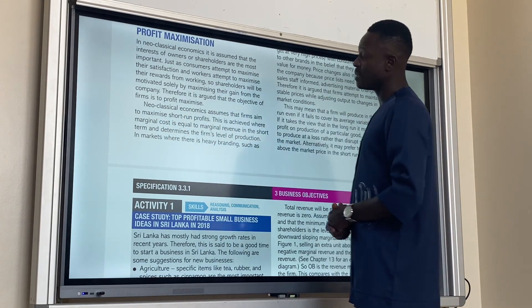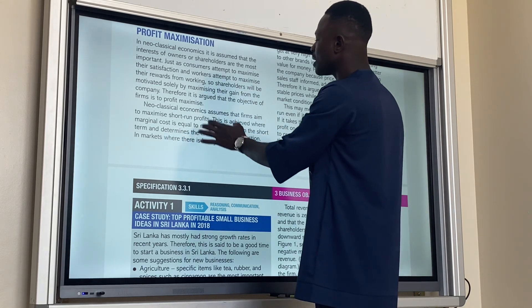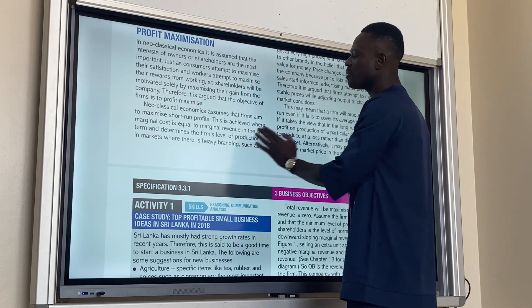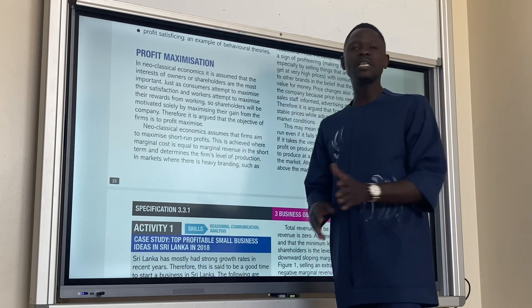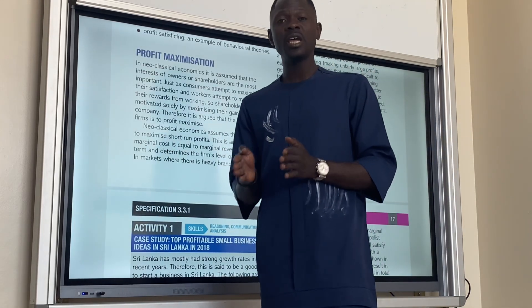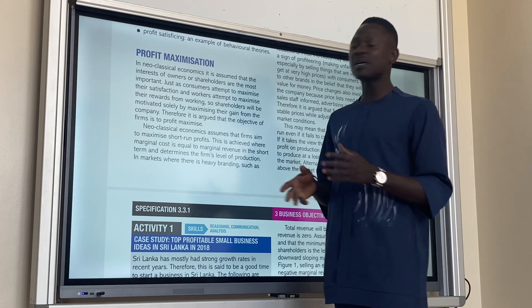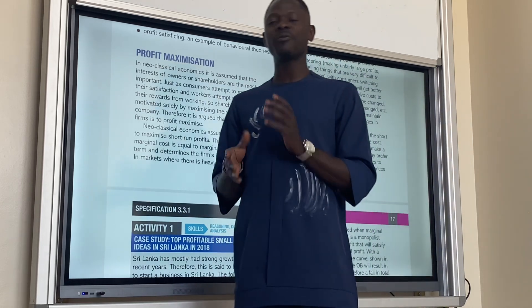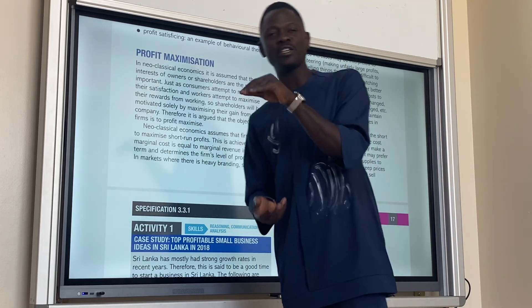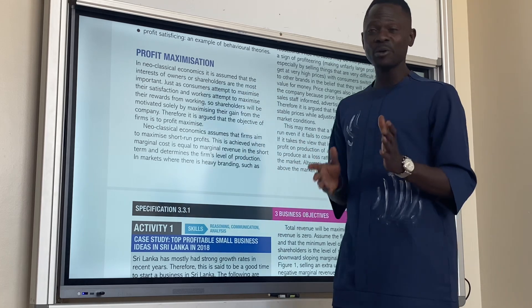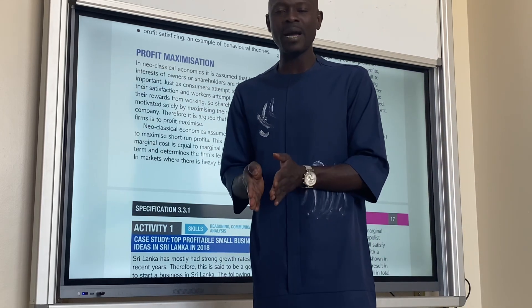Neoclassical economics assumes that firms aim to maximize short-term profits. This is where marginal cost equals marginal revenue (MC = MR) in the short term, and this determines the firm's level of production. Profit maximization simply means MC equals MR. Marginal cost is the cost of producing an extra unit of output, while marginal revenue is the extra amount earned from producing an extra unit. When MC equals MR, the firm is able to maximize its profit.